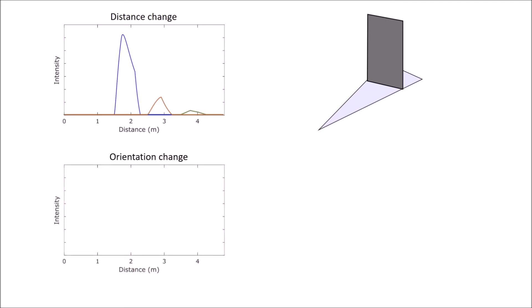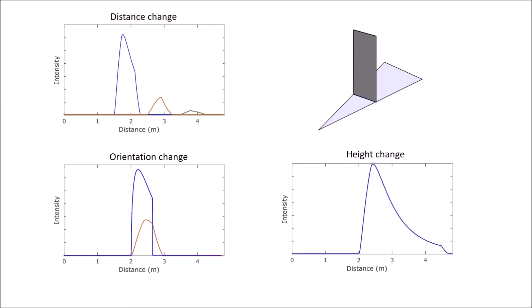Changing the orientation from front to parallel to a more oblique angle, reduces the intensity and changes the shape of the profile. Reducing the height of a facet does not change the start position or shape, but cuts off the decay at earlier times.